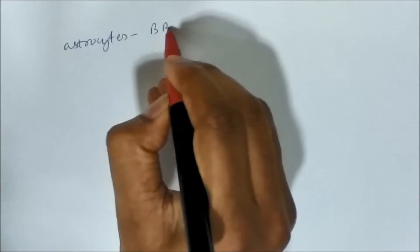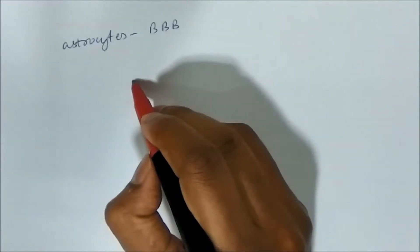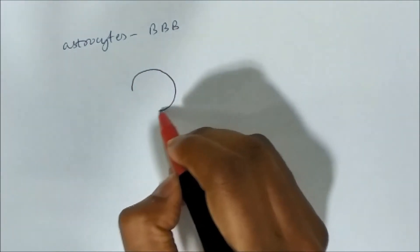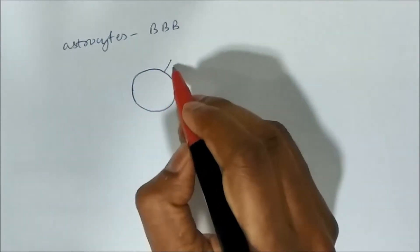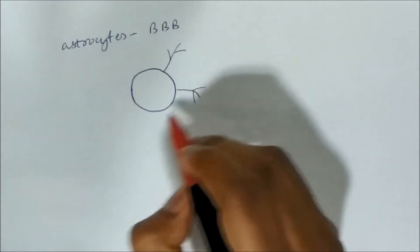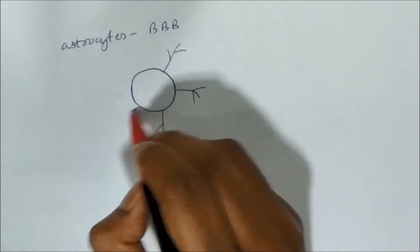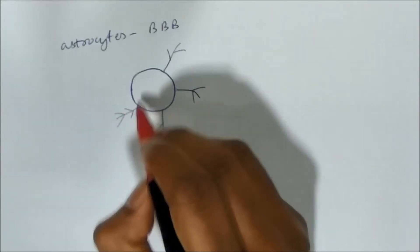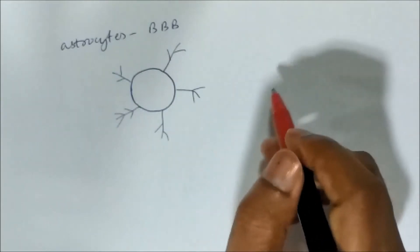First, astrocytes. We have studied the blood-brain barrier — the barrier which limits the passage of drugs and other exogenous substances into the brain. Astrocytes are a part of the blood-brain barrier. They look like stars, which is why they are called astrocytes. Their function includes being part of the blood-brain barrier and providing a link between blood vessels and neurons.